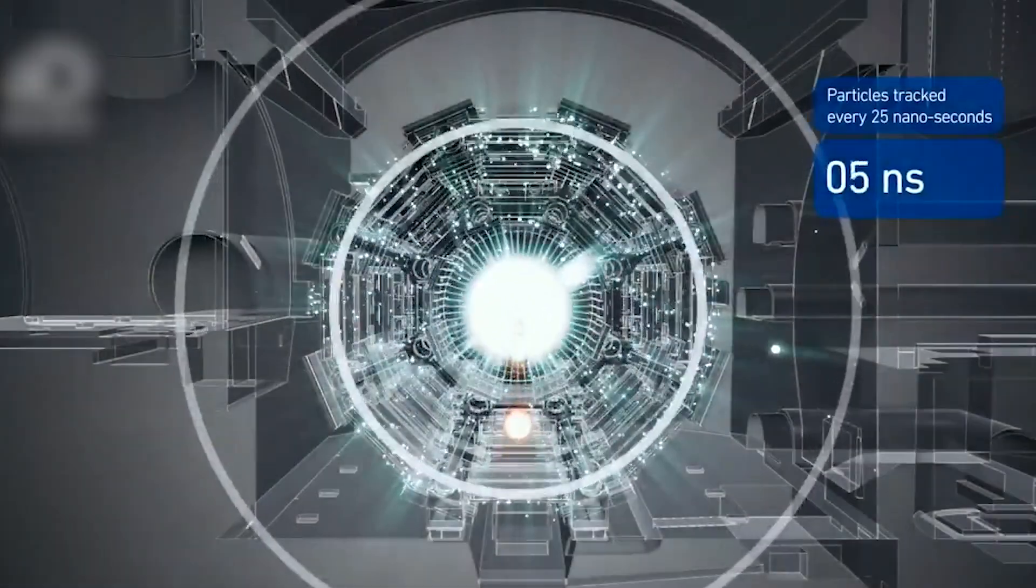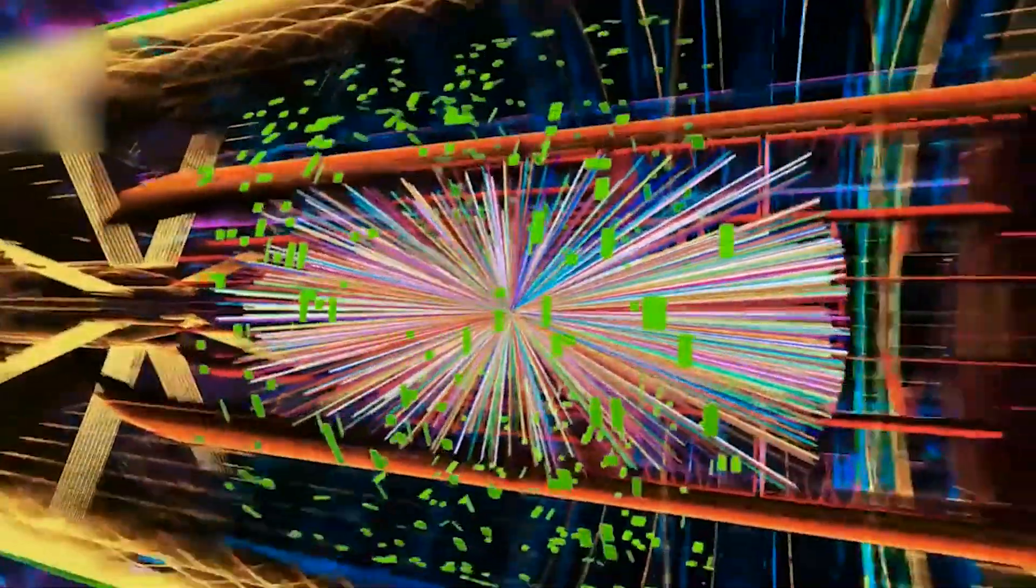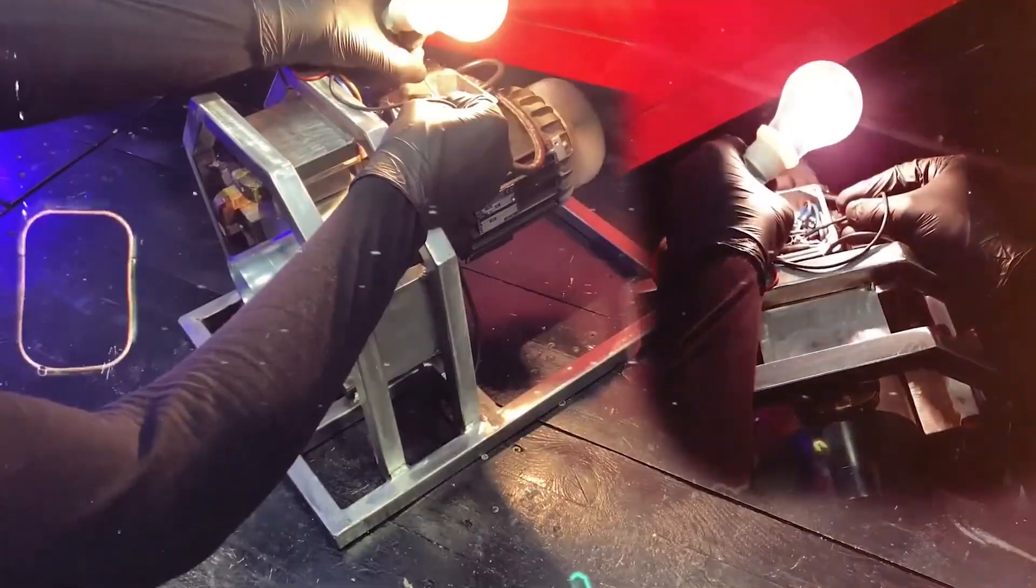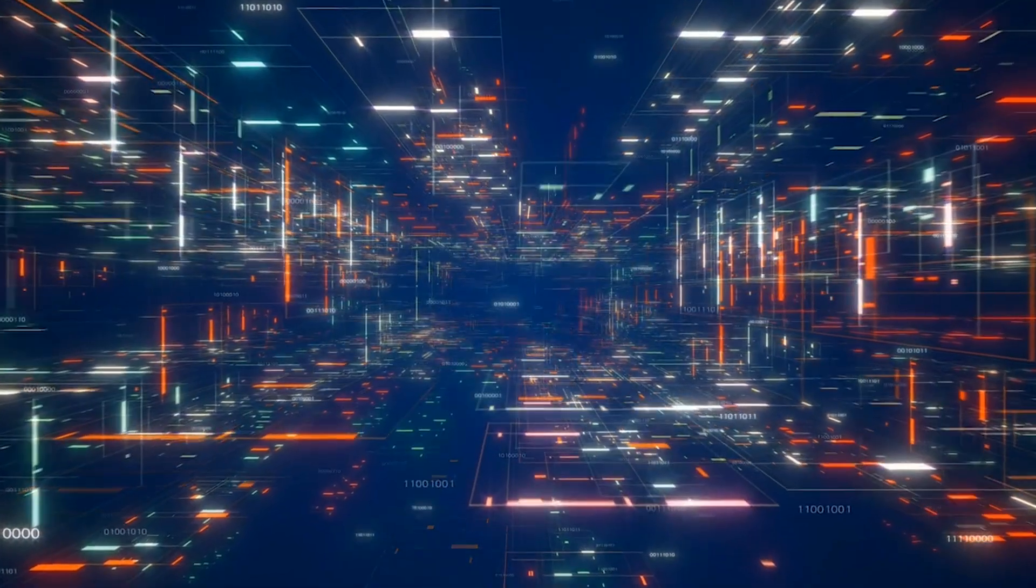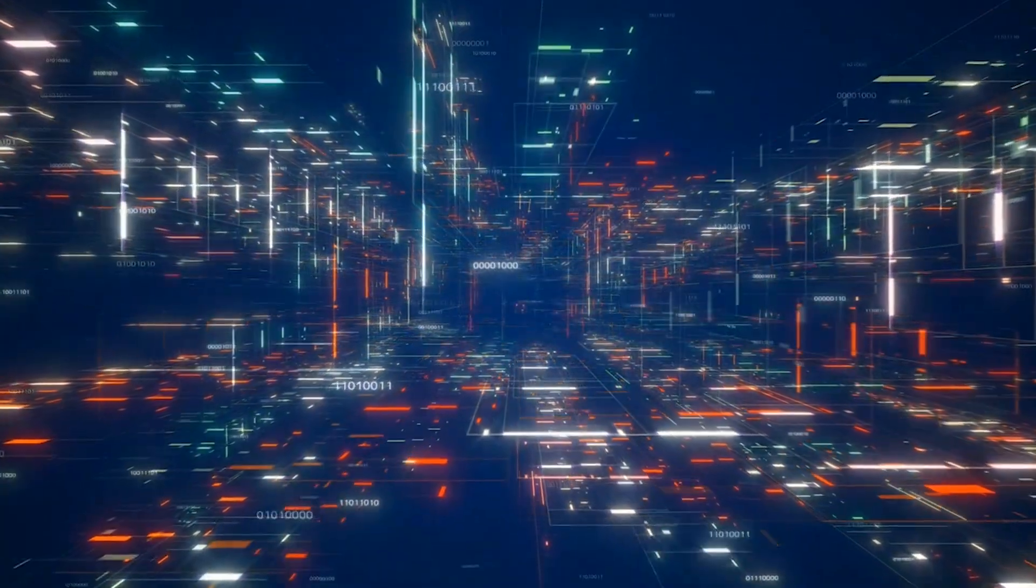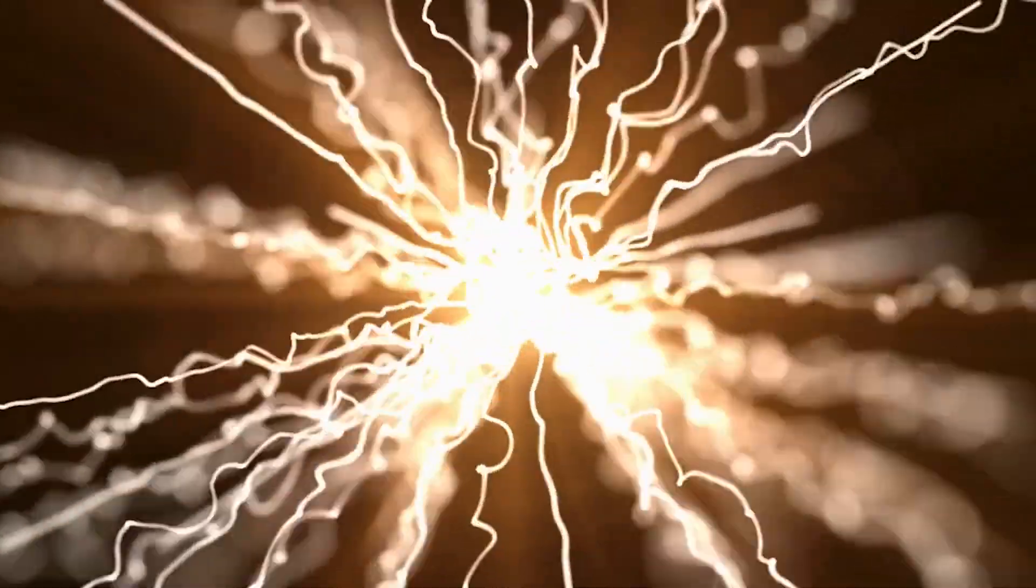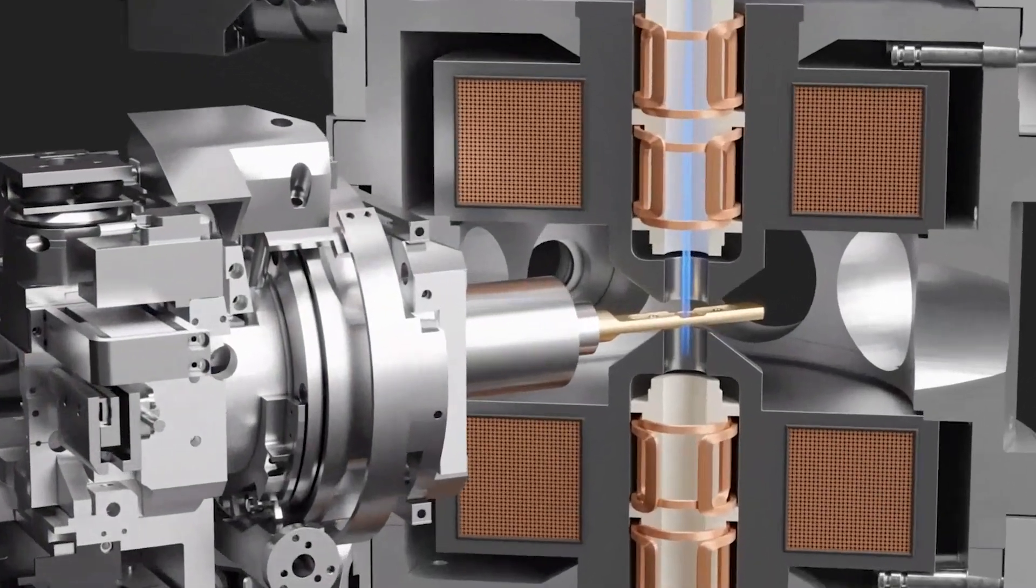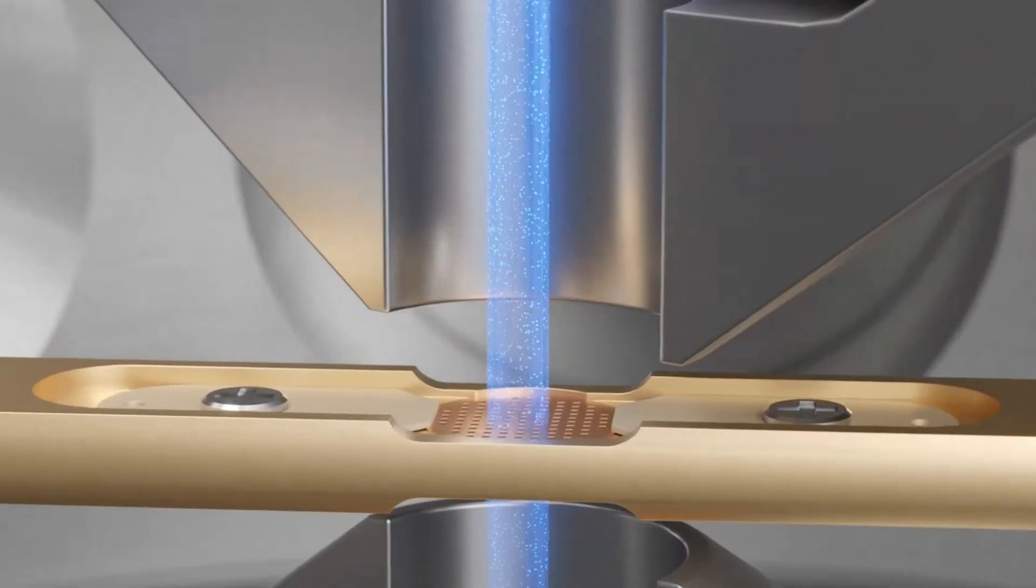The color of the emitted light depends entirely on the energy difference between the electron's excited and ground states. Every element has a unique electronic structure, meaning the energy gap is different for each one. Therefore, the color of light released is like a fingerprint for that element.